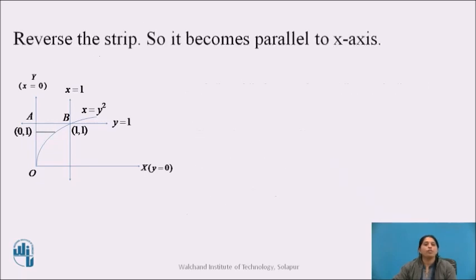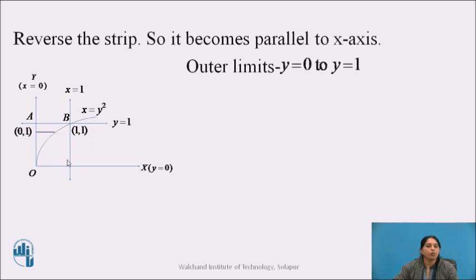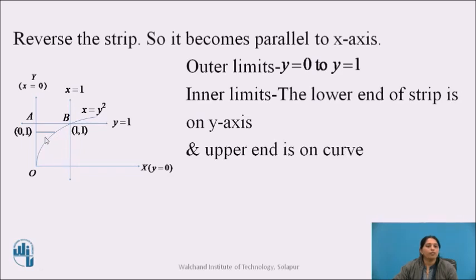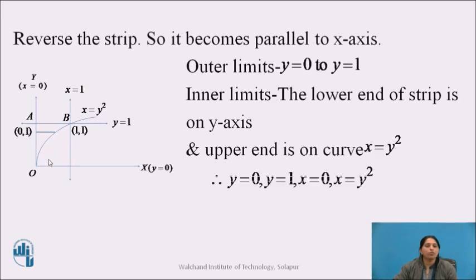To change the order of integration, we will reverse the strip so it becomes parallel to the x-axis. Now we will find the limits of the integral. To find the outer limits, we move this strip within the region of integration — it varies between the x-axis and the line y equals to 1, so y equal to 0 to y equals to 1 are the outer limits. To find the inner limits, look at the ends of this strip: its lower end is on the y-axis and the upper end is on the curve x equals to y², so the inner limits are x equal to 0 and x equals to y².